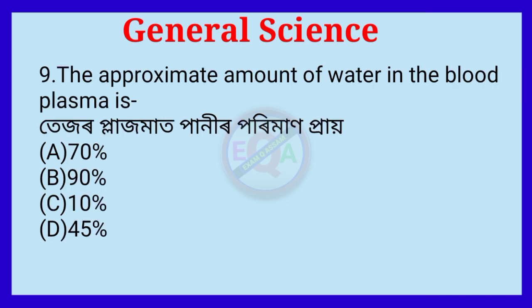Question number nine. The approximate amount of water in blood plasma is? The correct option is Option B: 90%.